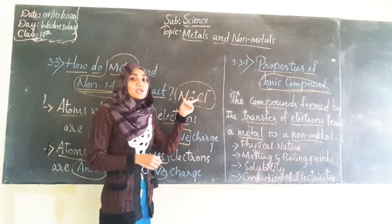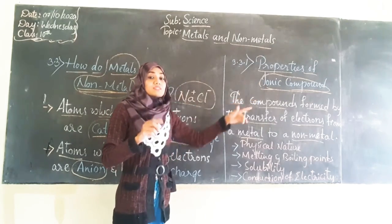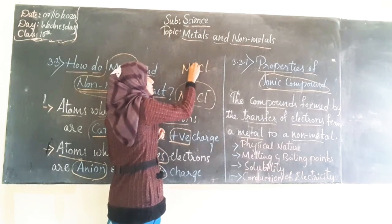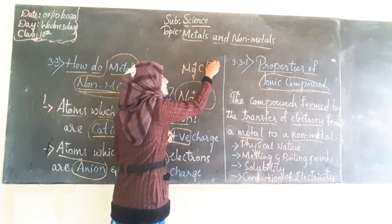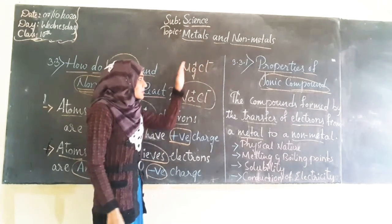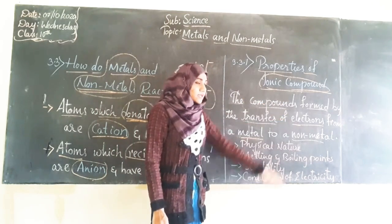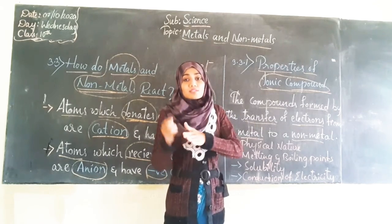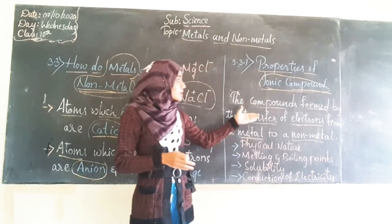Sodium chloride is an example of an ionic compound. Similarly, we have magnesium chloride. Magnesium will donate electrons to chlorine; hence chlorine will get a negative charge and magnesium will get a positive charge. Compounds which are formed by the transfer of electrons from a metal to a non-metal are called ionic compounds.